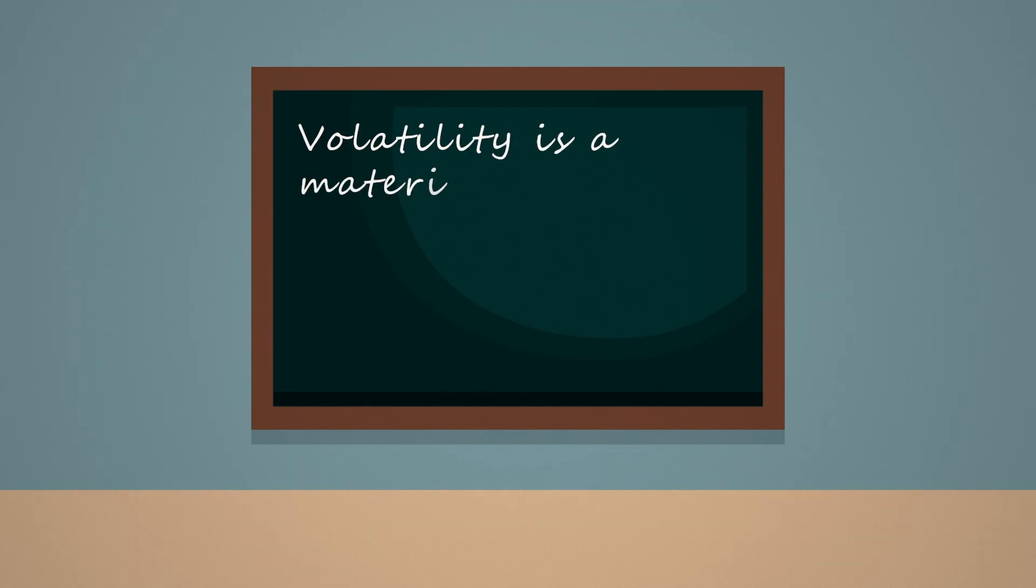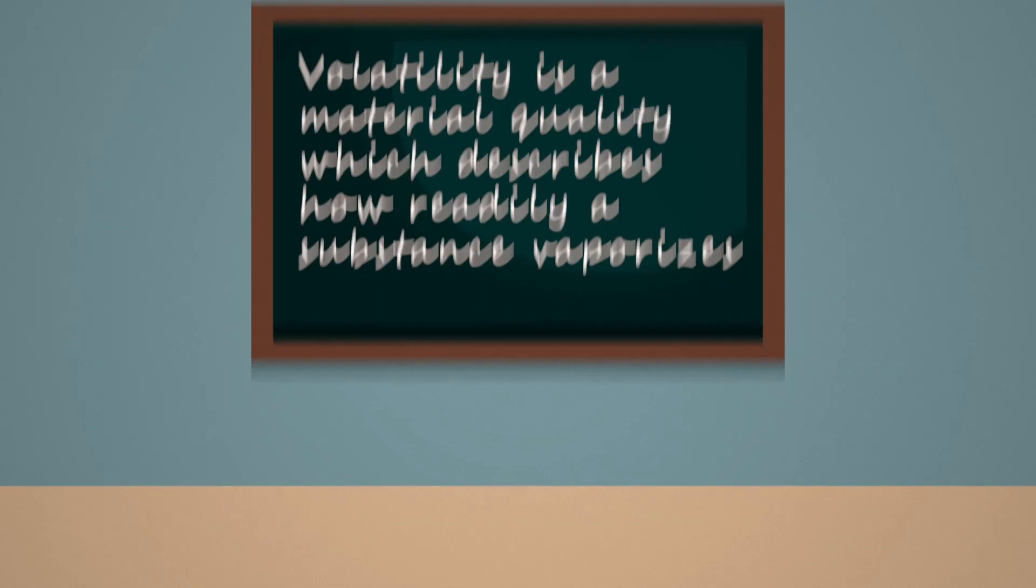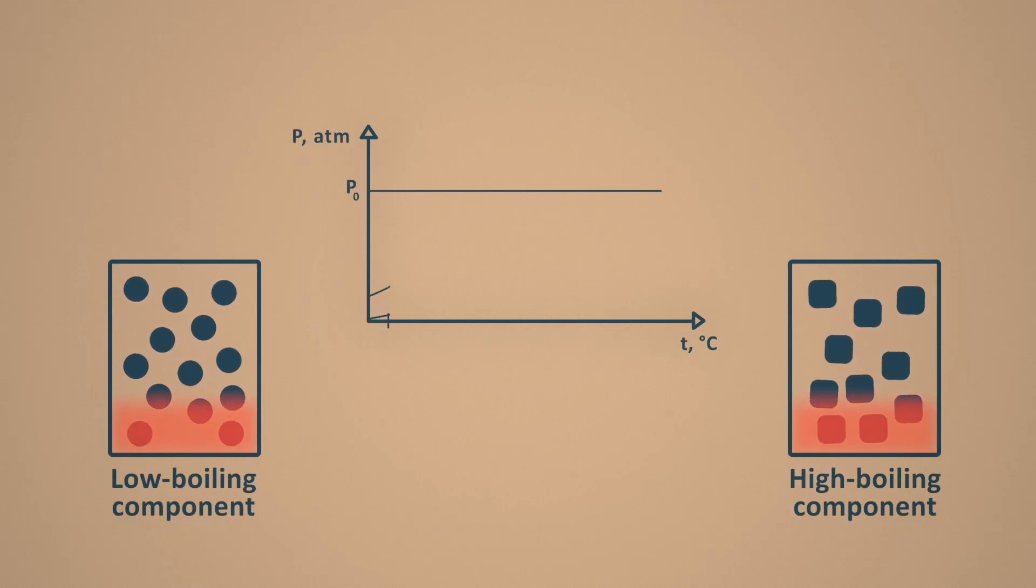Volatility is a material quality which describes how readily a substance vaporizes. This parameter determines the vapor composition. It will contain more highly volatile or low boiling component compared to the initial mixture. Vice versa, the non-evaporated liquid will contain more low volatile or high boiling component.